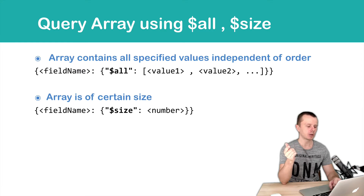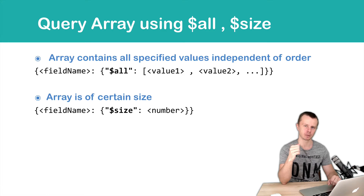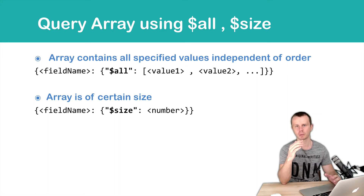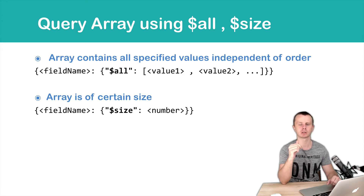The next operator is $size. It is very simple — it just needs a number as a value, and it will look for documents with an array of a certain size, for example three elements, four elements, and so on.